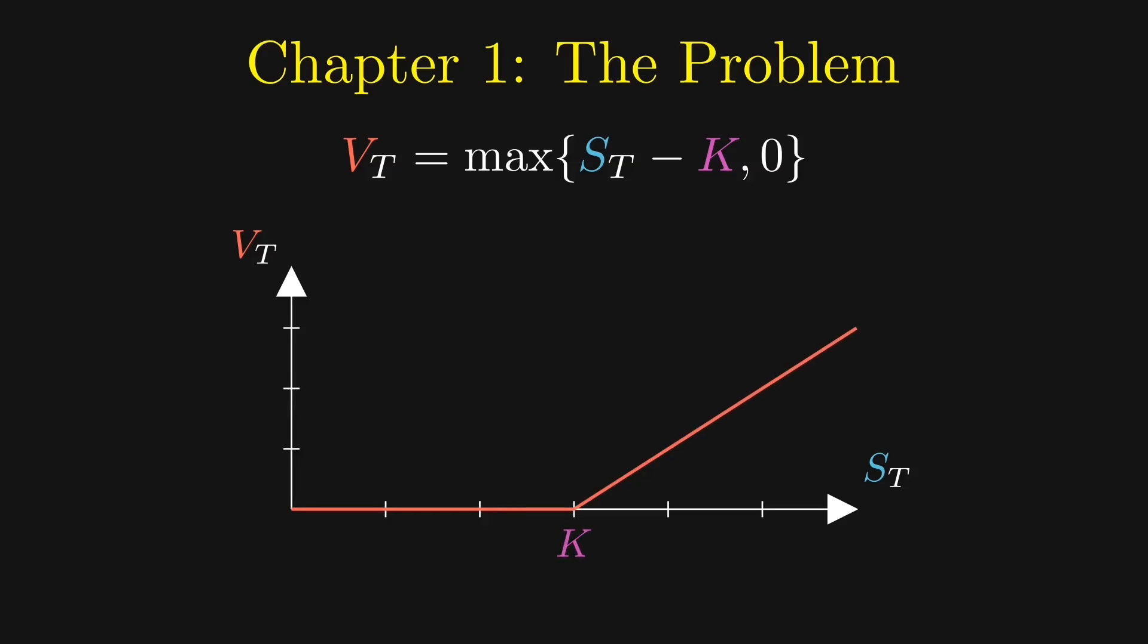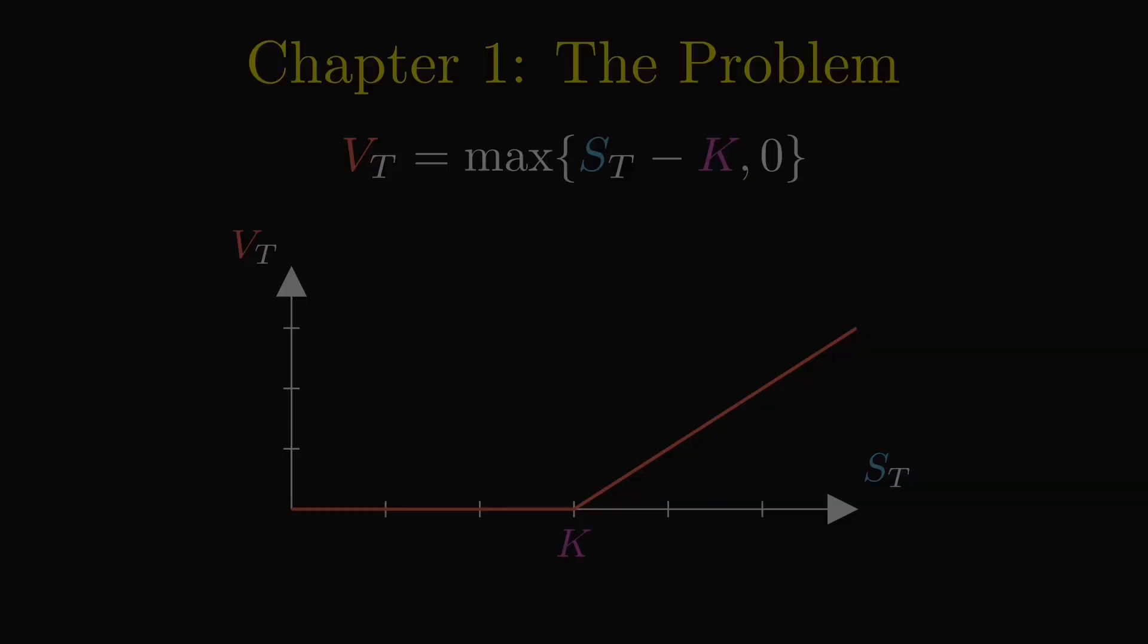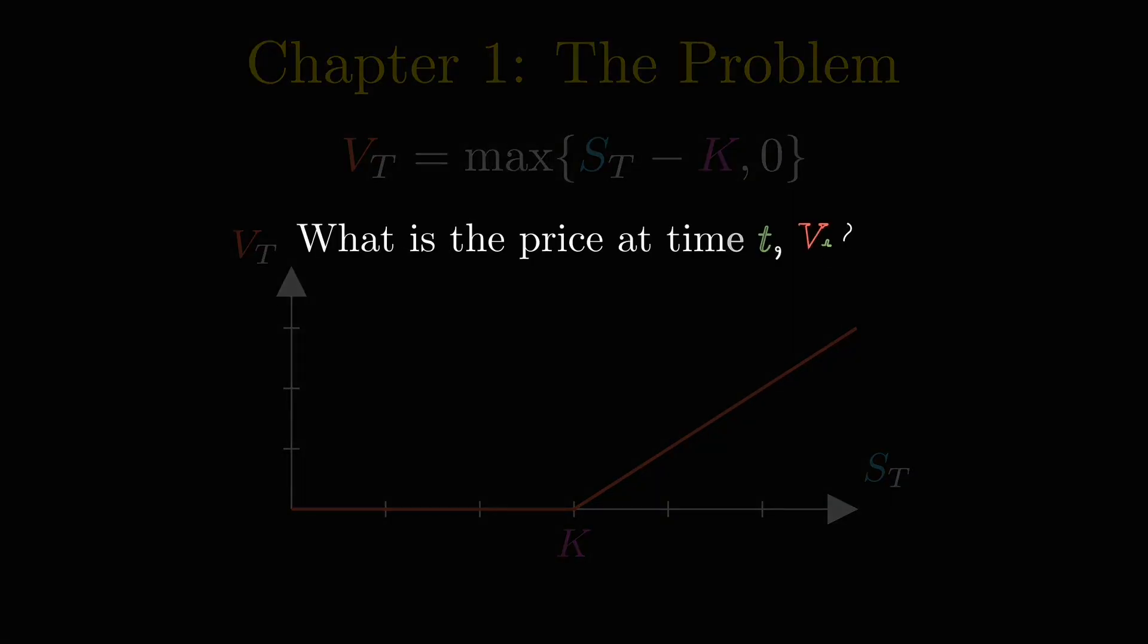This graph shows the payoff, which is exactly equal to the fair price we will pay for this option at the expiration date, so that we gain or lose nothing. The question is, how much is the price at some time before the expiration?